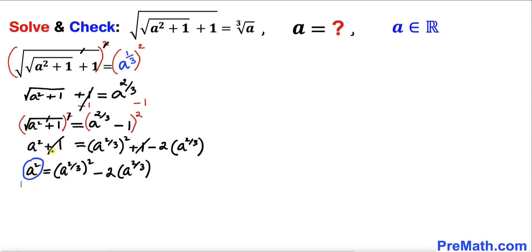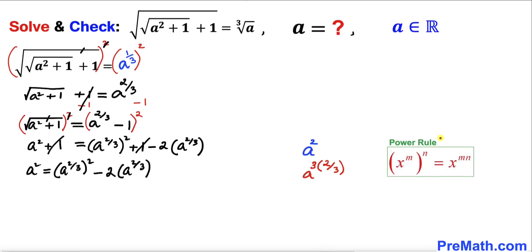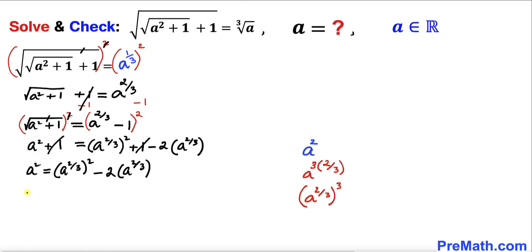Now let's focus on the left hand side, a squared. We can rewrite this as a to the power 3 times a to the power 2/3. Applying the power rule, this becomes a to the power 2/3, taken to the whole power 3. So a squared can be replaced by the quantity a to the power 2/3, raised to the 3rd power.